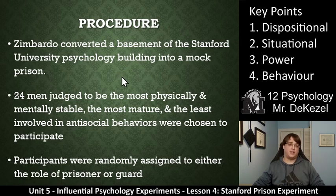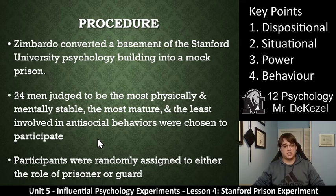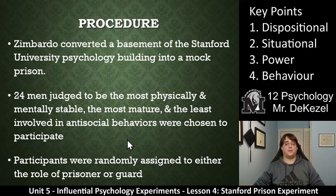Zimbardo converted a basement of the Stanford University psychology building into a mock prison. He then took 24 men who he judged to be the most physically and mentally stable, the most mature, and least involved in antisocial behaviors — very level-headed, very even-tempered people. These 24 men were then split into the role of either a prisoner or a guard.